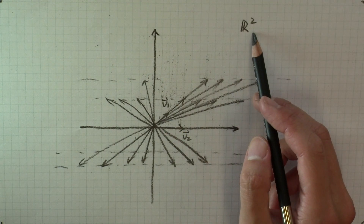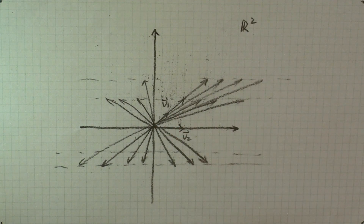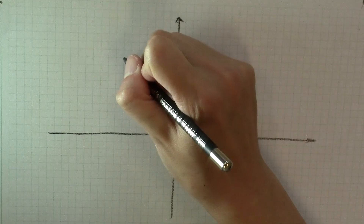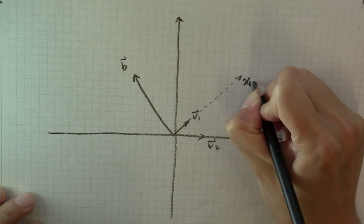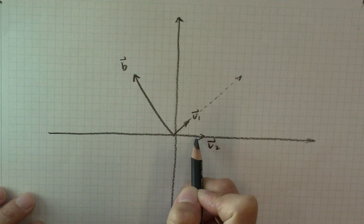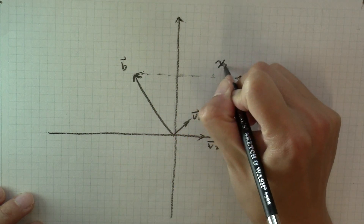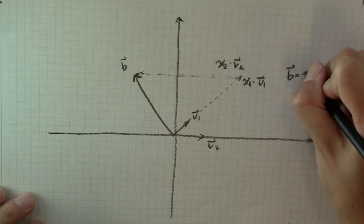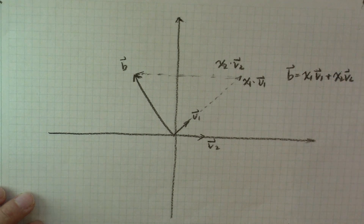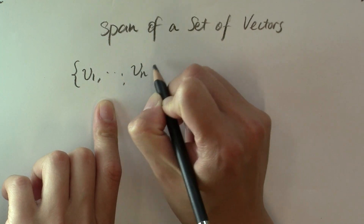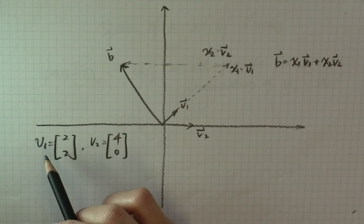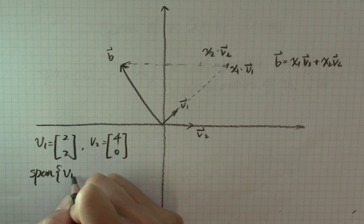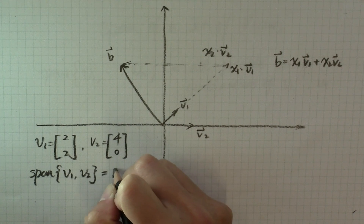That means any vector in R2 can be represented as a linear combination of v1 and v2. For example, let's pick an arbitrary vector b. If we stretch v1 to x1·v1 and multiply a scalar to v2 to get x2·v2, then b equals x1·v1 plus x2·v2, which is a linear combination of v1 and v2. The set of all possible linear combinations of vectors v1 to vn has a formal name: the span. The span of v1 and v2 is the entire space of R2.